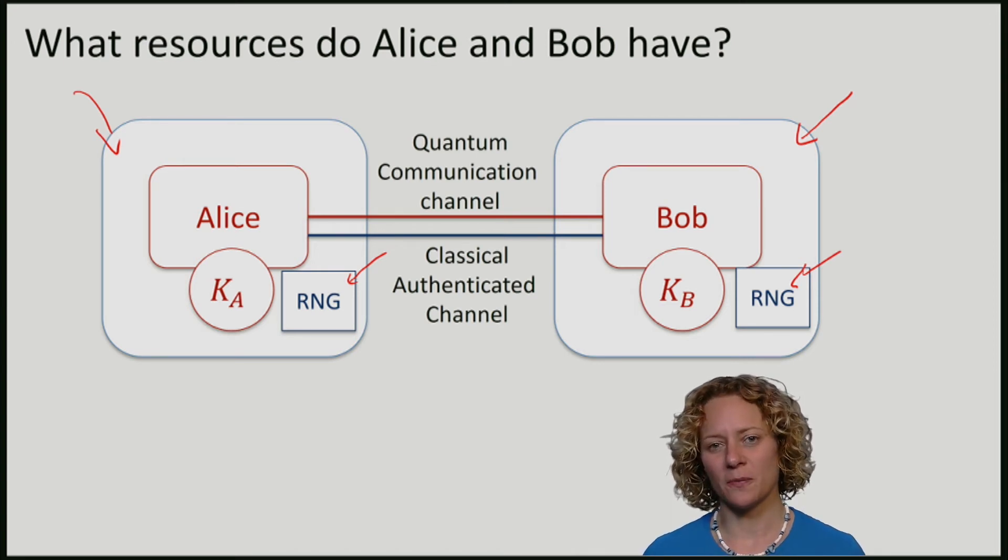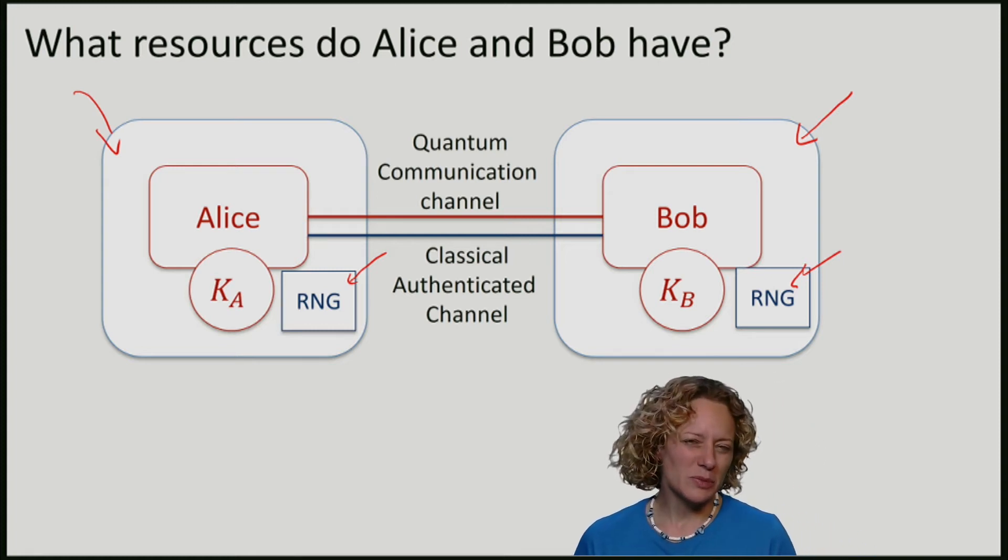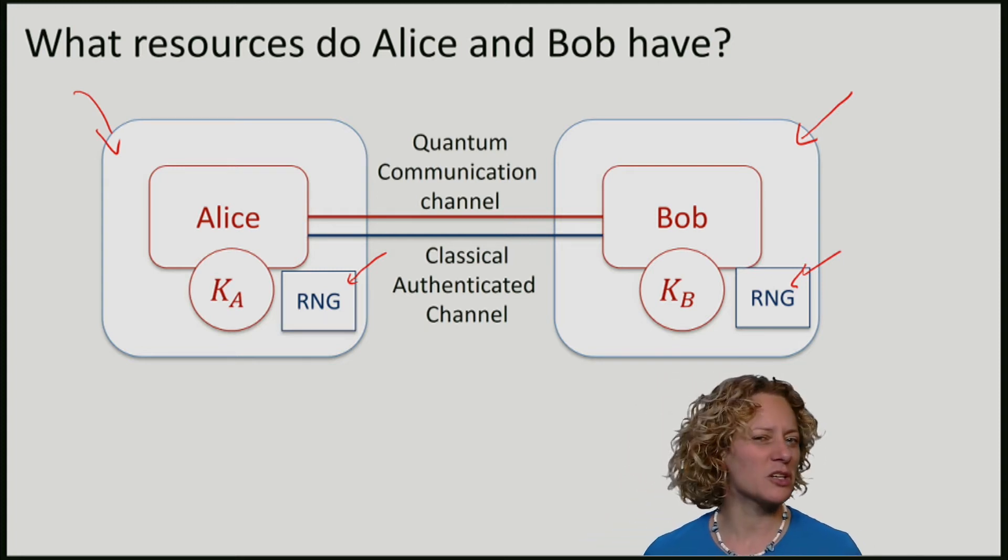This is the scenario with only Alice and Bob. So what about Eve? What can she do?